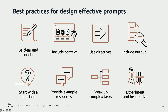Use clear directives or action words like 'explain,' 'summarize,' or 'generate' to guide the model on the type of response you expect. Starting your prompt with a question can be an effective way to frame the task. Providing one or more example responses can also be helpful, as it allows the model to better understand the type of output you are looking for. For more complex tasks, consider breaking them down into smaller, manageable steps — this can help the model tackle each aspect more effectively. Finally, don't be afraid to experiment and be creative with your prompting approaches.